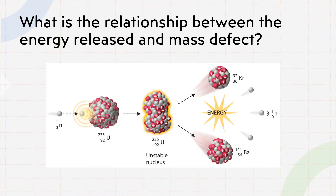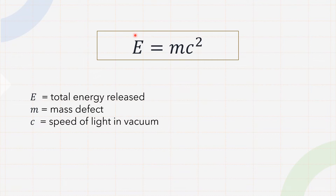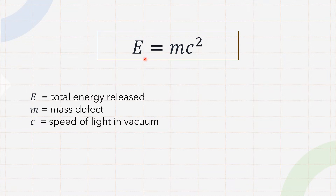Going back to our main question of the lesson: what is the relationship between energy released and mass defect? As physicists we relate it with a formula. Capital E, the total energy released after the reaction, equals mass defect m times c squared, where c is the speed of light in vacuum. This is the most renowned formula in the history of physics, made by Albert Einstein.